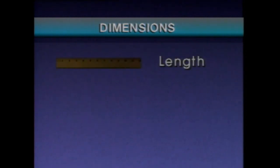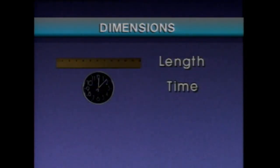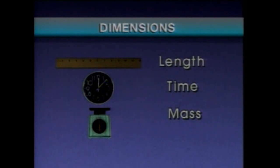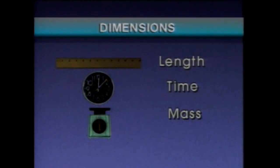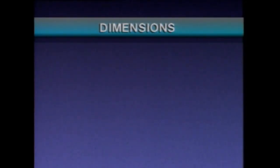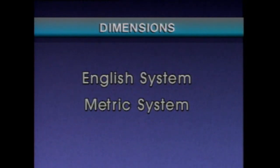Some of the physical properties that we measure are referred to as dimensions. The fundamental dimensions are length, time, and mass. These three dimensions and the units associated with them are the basis for many of the measurements that are made in a plant. Two standard unit systems that are commonly used to measure the fundamental dimensions are the English system and the metric system. We'll use the English system for this discussion.